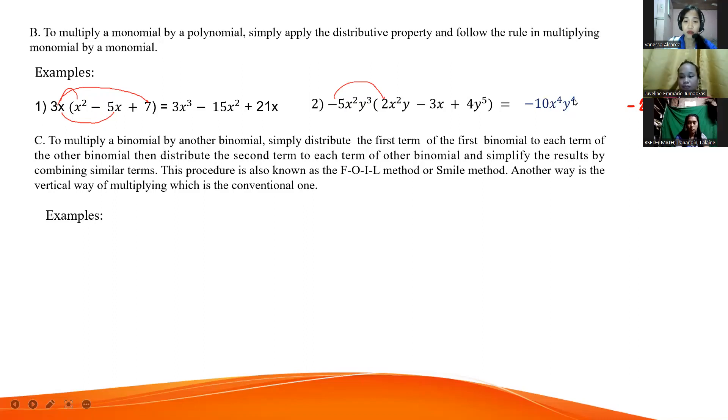To the power of 4, because simply multiply the base and the exponent is added. That's why it became 4. And on the other side is also 4, because 3 plus 1. There's an imaginary 1 here. Very good.